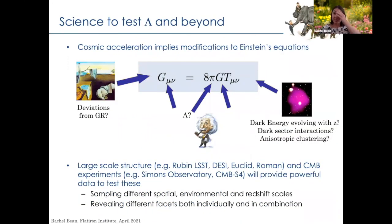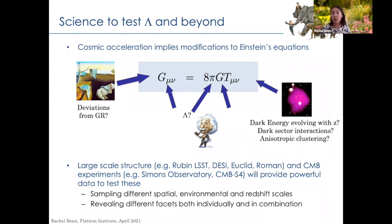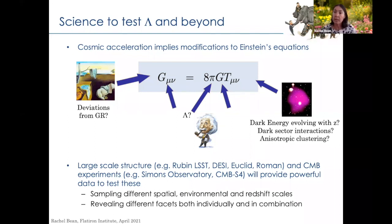The whole motivation of this is to really understand the origins of cosmic acceleration. This has been an effort for over two decades, trying to understand where modifications to Einstein's equations need to come in to explain cosmic acceleration. It could be a cosmological constant, but we still have not understood why the observed value is 120 orders of magnitude smaller than those predicted by theory. It could be a different type of matter that evolves with redshift, or it could be that we just don't understand gravity on cosmological scales.